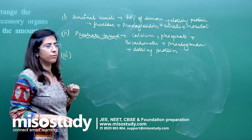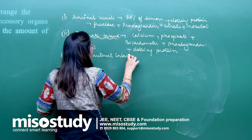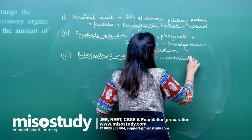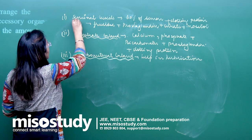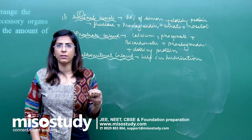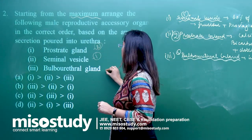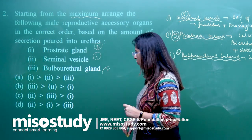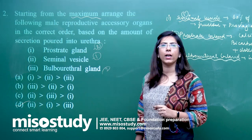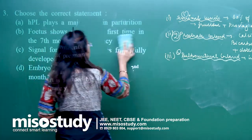In the third number, the least secretion is from the bulbourethral gland. Its secretion helps in lubrication, so very little secretion is produced. So the order is: seminal vesicle first, prostate second, bulbourethral third — giving us the sequence 2, 1 and 3, which corresponds to option D. So for question number 2, the correct option is D.